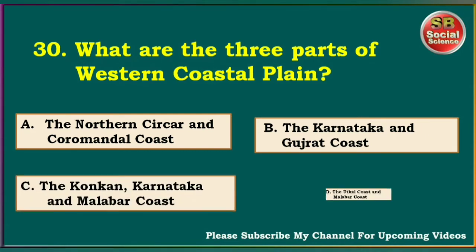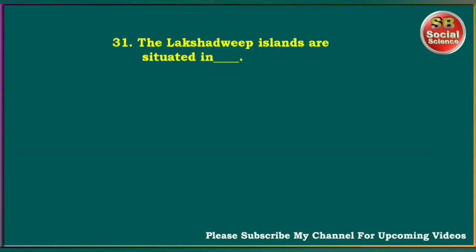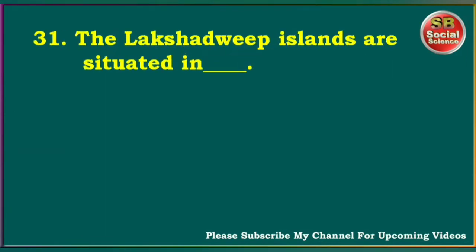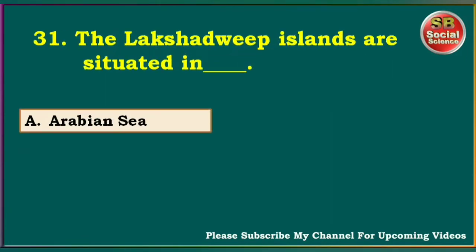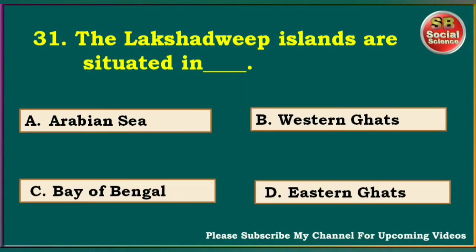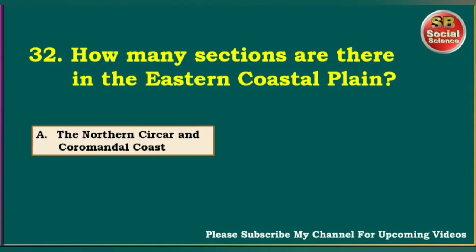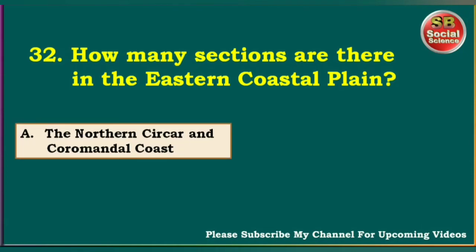The answer is the Konkan, Karnataka and Malabar Coast. The Lakshadweep Islands are situated in which sea? Arabian Sea, Western Ghats, Bay of Bengal, Eastern Ghats. The answer is Arabian Sea. How many sections are there in the Eastern Coastal Plain? The Northern Sarkars and Coromandel Coast, Karnataka and Gujarat Coast, the Malabar and Konkan Coast, the Utkal Coast and Malabar Coast.